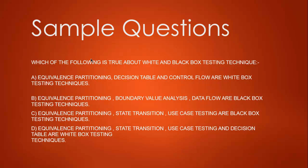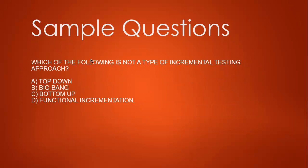Option C: equivalence partitioning, state transition, and use case testing are black box techniques — this looks correct. Option D adds decision table to that list, but decision table is a white box technique, not black box, so option D is wrong. Therefore option C is the correct answer.